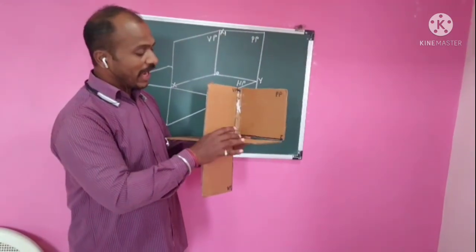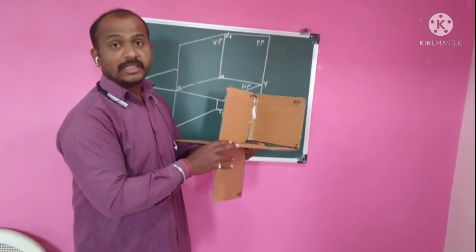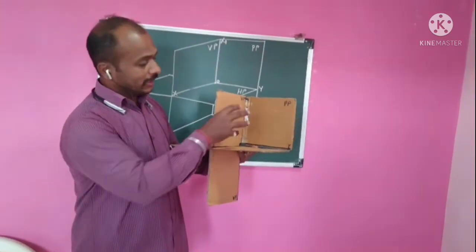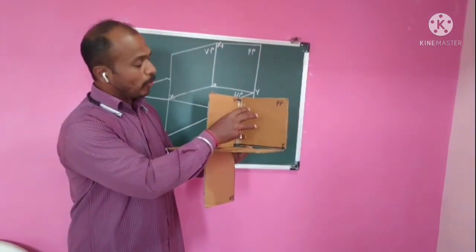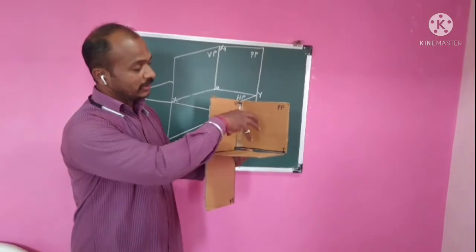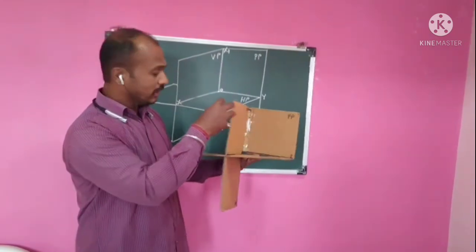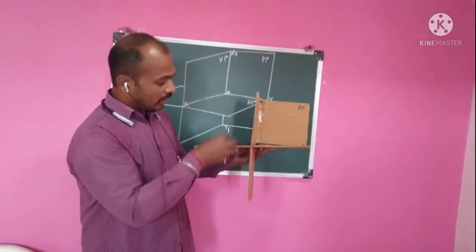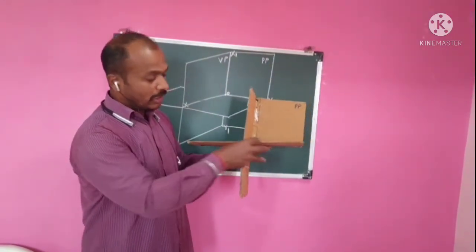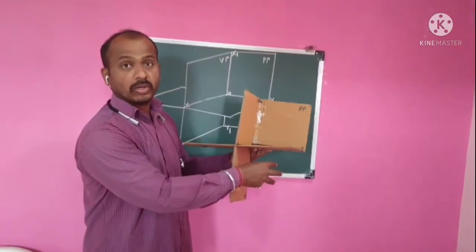Now with HP and VP, there are four quadrants. This is the first quadrant, second quadrant, third quadrant, and fourth quadrant.